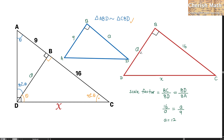Since the value of A is 12, I am going to use the Pythagorean theorem to solve for X on triangle CBD. The value of X is the square root of 16 squared plus 12 squared. The answer for the value of X is 20 units.